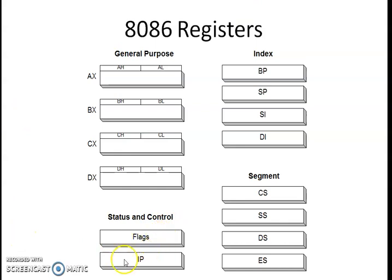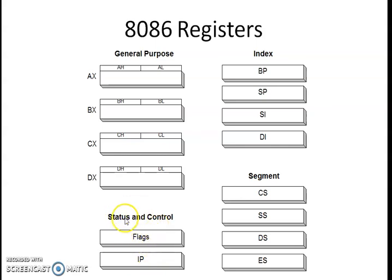Status and control registers are used to indicate the status of the microprocessor or to control the behavior of the processor. The instruction pointer, combined with CS, is used to fetch the current instruction — using CS and IP together to get the current instruction onto the processor. This is not under the control of the programmer; it is under system control only. The flag register indicates the status of arithmetic and logical operations performed by the processor and also controls processor behavior.